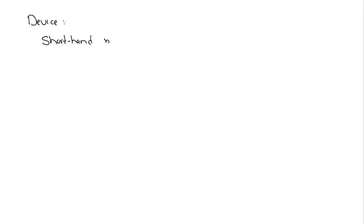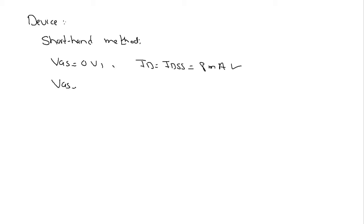Next, I will plot the transfer characteristic (device characteristic) curve using the shorthand method with only three points. From the transfer characteristics: when VGS = 0 V, ID = IDSS = 8 mA — this is point one. When VGS = VP = -6 V, ID = 0 mA — this is point two. These are the two extreme points.